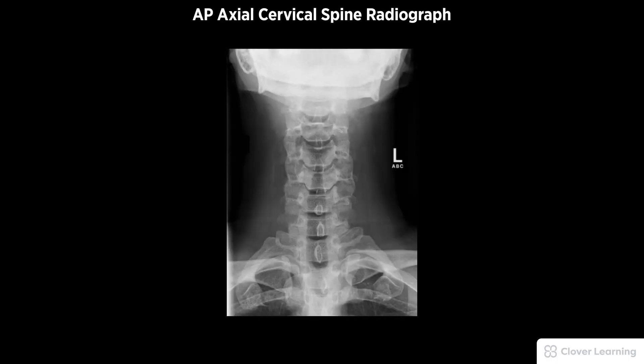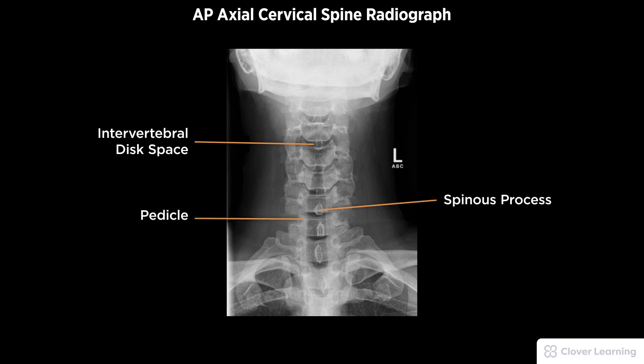A diagnostic AP axial cervical spine radiograph must be free of motion and rotation. Demonstrated anatomy to include bony detail of the cervical spine. The intervertebral disc spaces should be open with the spinous processes equidistant to the pedicles and aligned with the midline of the cervical bodies.